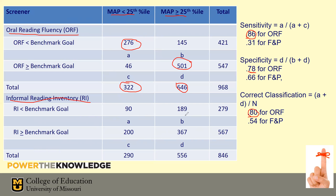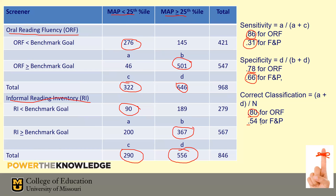Now let's look at the reading inventory. Of the kids who did well on the MAP, 556 kids did well, and 367 of them also did well on the reading inventory — about 66%, a little low but not horrible. Then there were 290 kids who did not do well on the MAP, and of those, only 90 did not do well on the reading inventory — just 31%. So you can spend thousands of dollars to buy this test, take time to train all your teachers, spend 20 or 30 minutes per kid — or based on a correct classification of 54%, just give teachers a quarter and flip it every time a kid walks in. These types of measures are not designed to be screening measures, regardless of what the publishers say.